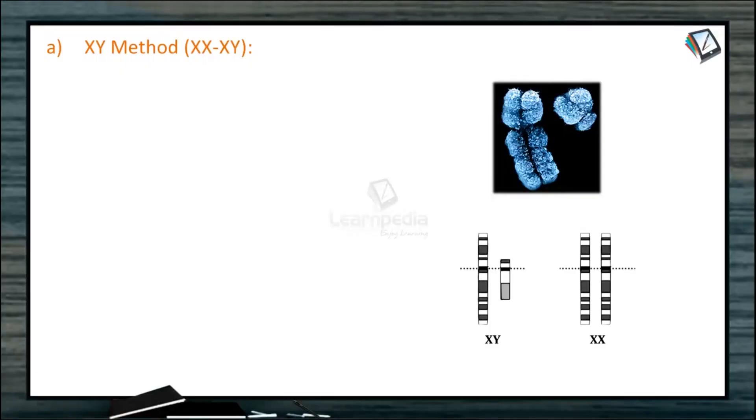Now we are going to see in detail the XY method. What is the meaning of XY method? In individuals, mostly in human beings, you see the actual photograph of the X and Y chromosome. Now all the other autosomes are alike.